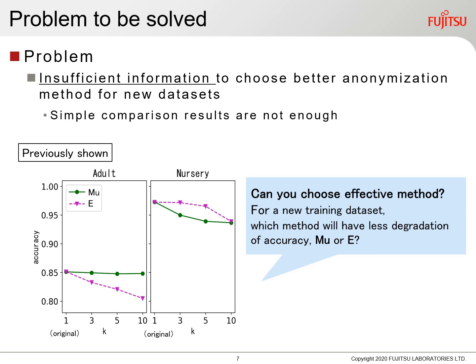There is not enough information to choose a better anonymization method for new datasets. Simple comparison results are not enough. When anonymizing a new training dataset, which method will have less degradation of accuracy — the mutual information method or the entropy method? The results of these experiments show that it is difficult to find an effective method for new datasets.